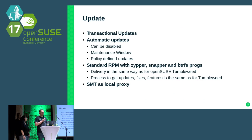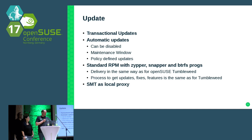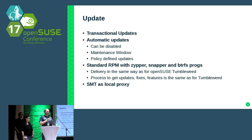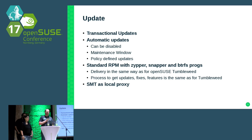How do we update systems? We use transactional updates. In about one hour fifty minutes I'll give a dedicated talk on transactional updates. All updates are applied automatically — this can be disabled. You can define a maintenance window in which updates are applied and the machine rebooted. You can define other policies for how machines are updated. We use standard RPMs with Zypper, Snapper, and BtrFS — no need to invent anything new, just a script wrapping the update process.